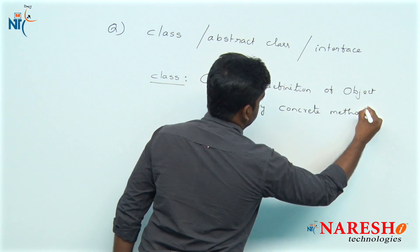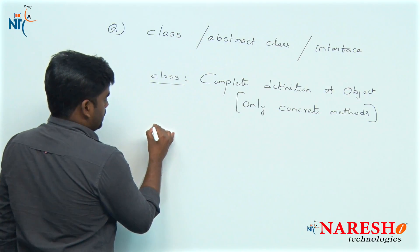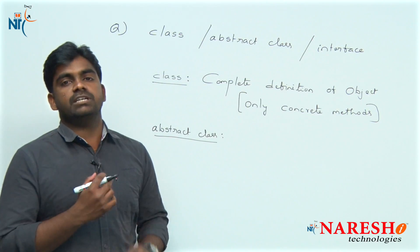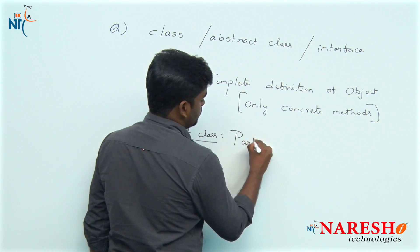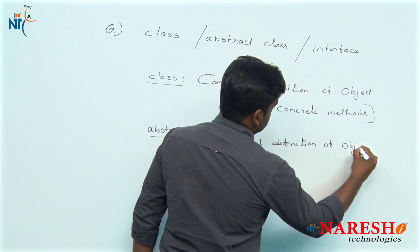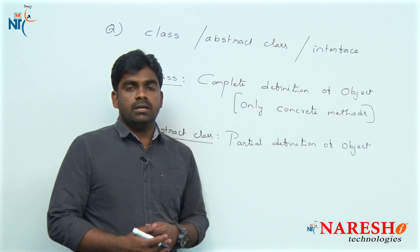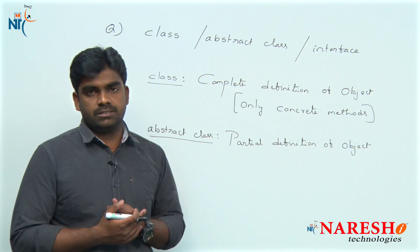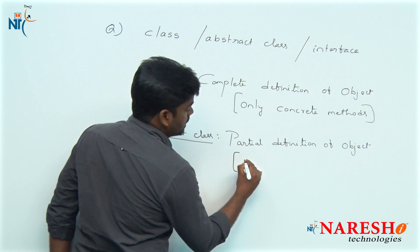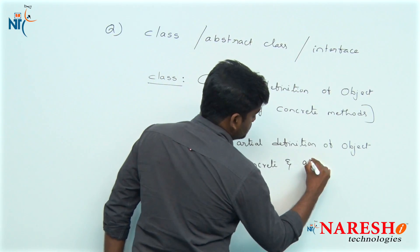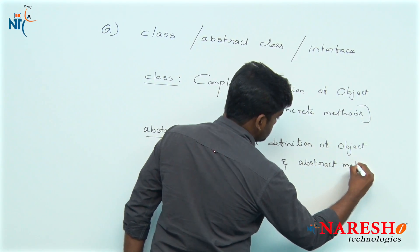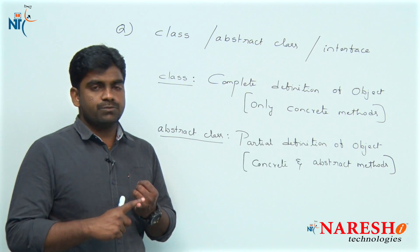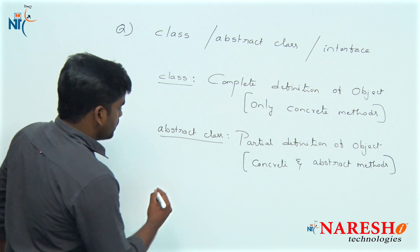What is an abstract class? It is not the complete definition — it is a partial definition of an object. In an abstract class, if you define four or five methods, you do not have to provide definitions for all of them. Both concrete methods and abstract methods are allowed. Concrete methods have a body; abstract methods are only specifications with no body.